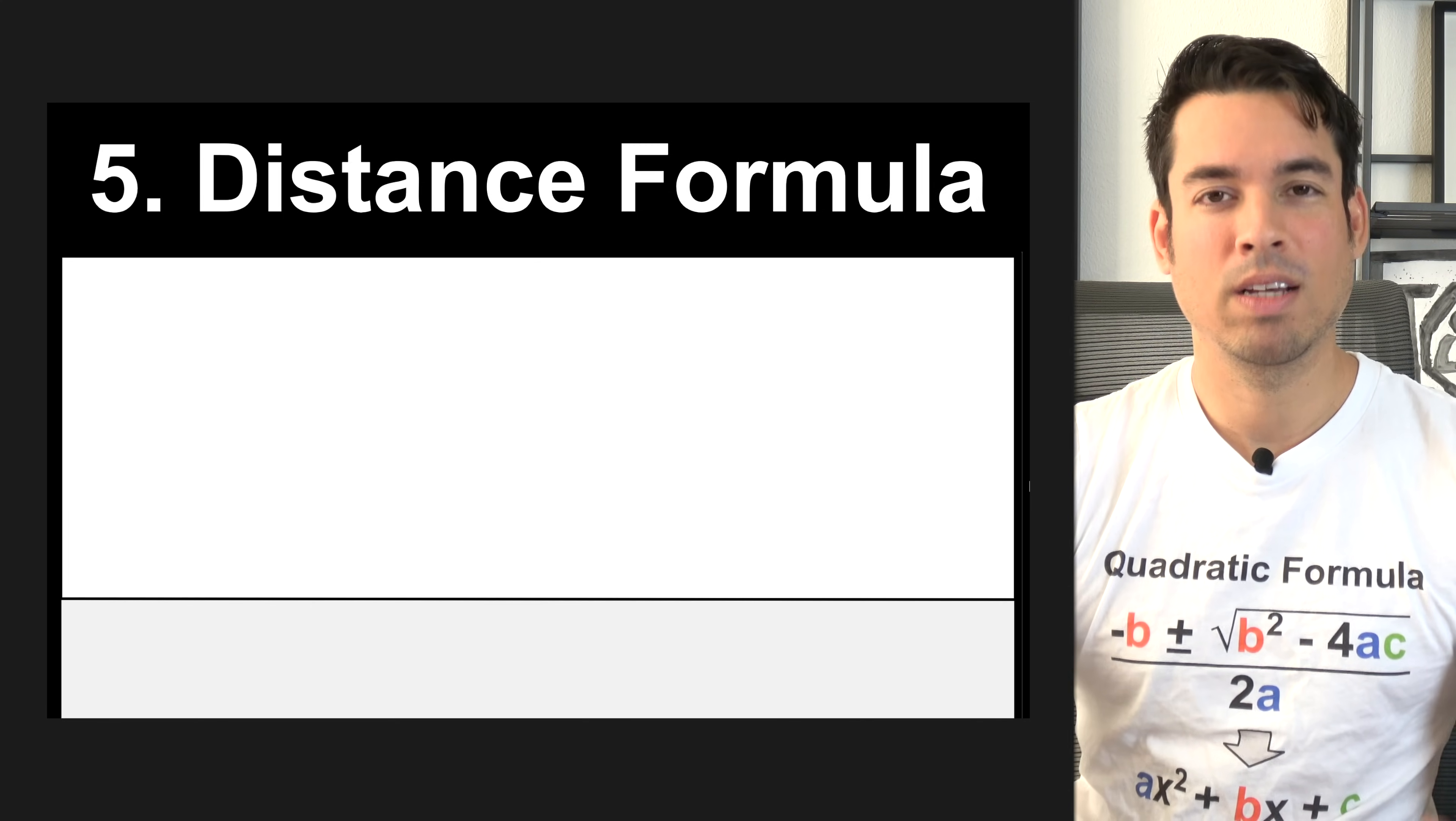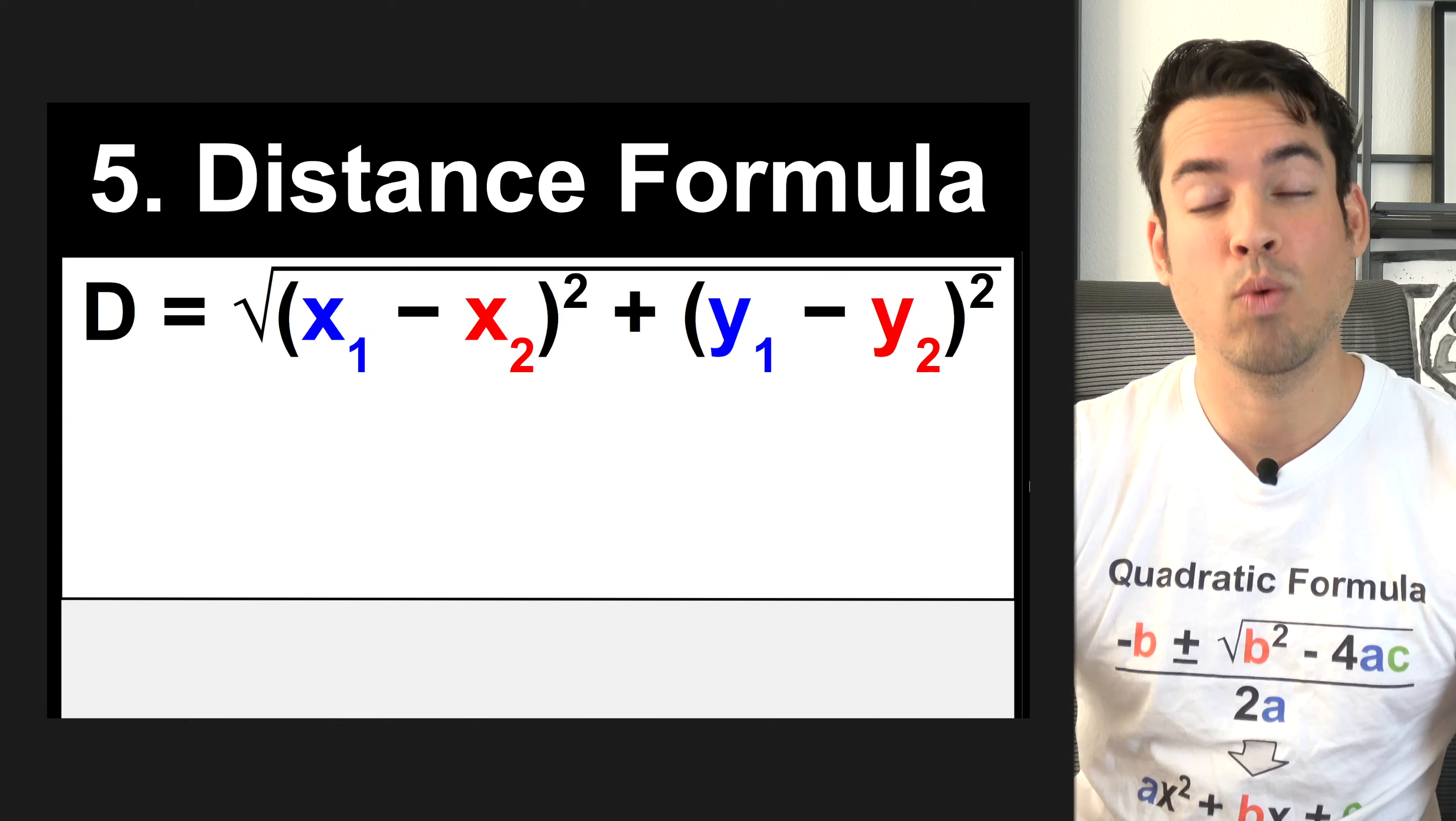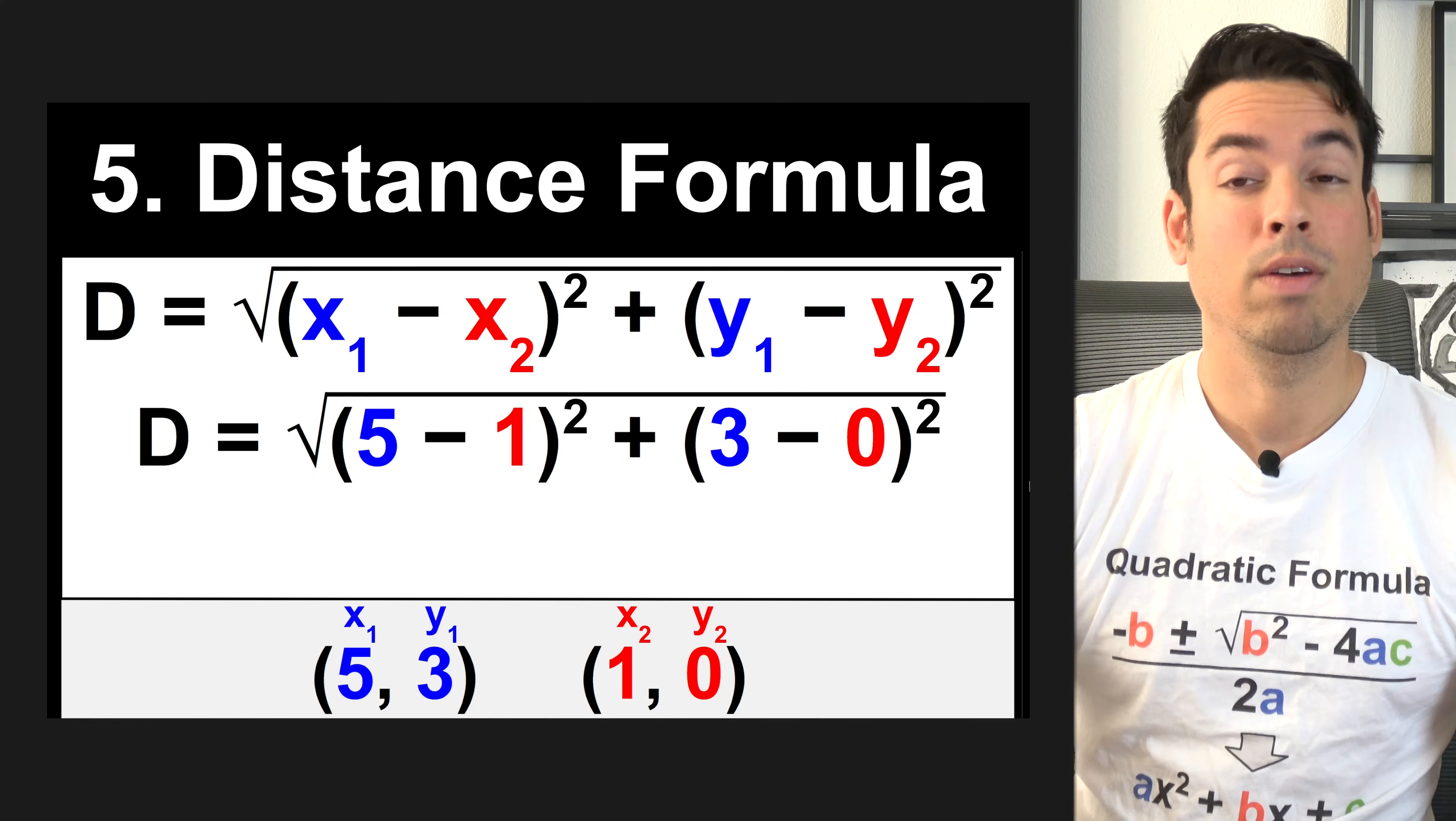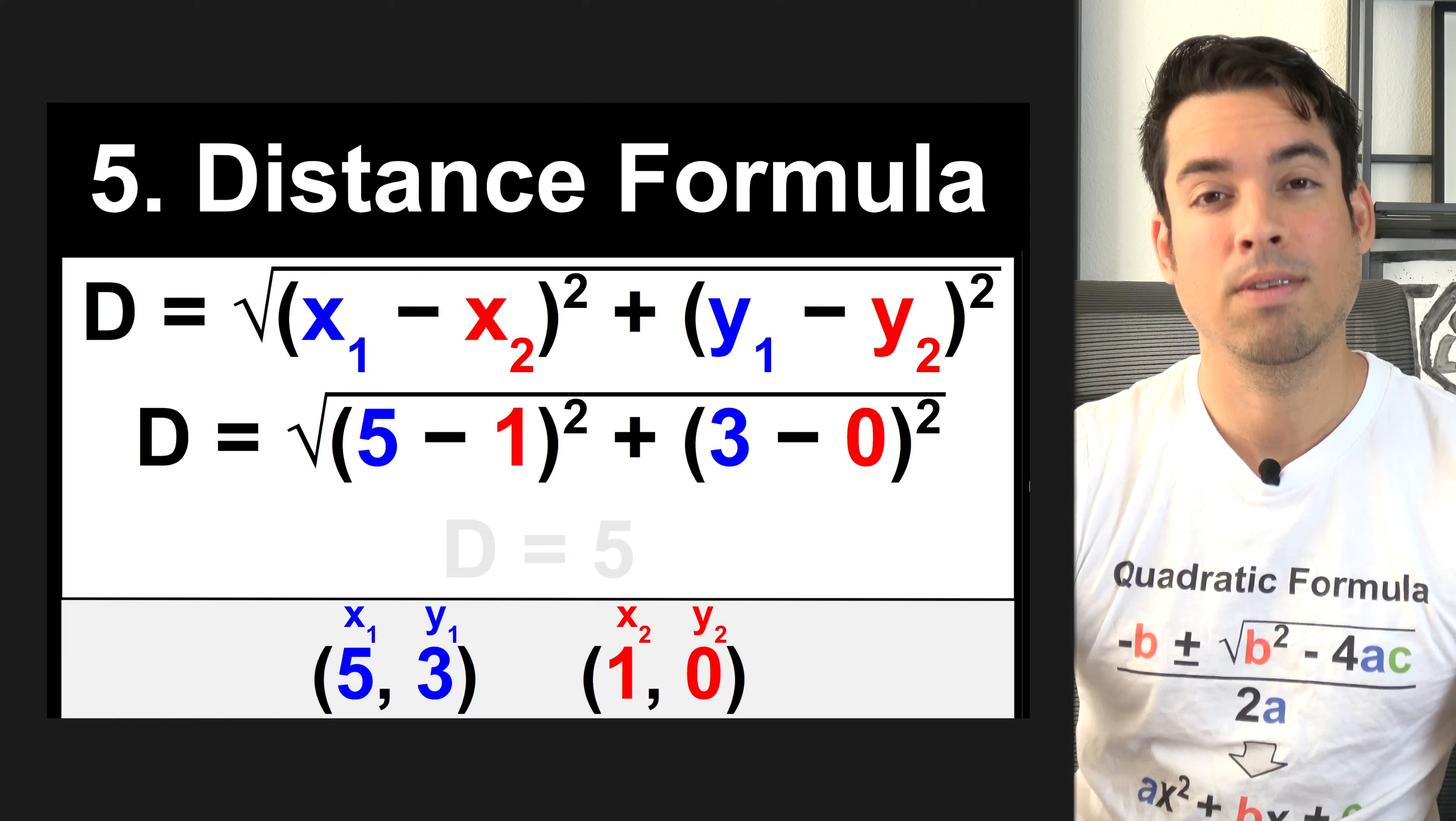Next, we have the distance formula, the formula that you're going to use to calculate the distance between any two points on a coordinate plane. With the distance formula, we're taking the difference of the two X values, squaring that, and adding it to the square of the difference of the two Y values. If we have the two points 5, 3, and 1, 0, we can plug them into the distance formula like so. 5 minus 1 squared is 16, and 3 minus 0 squared is 9. 16 plus 9 gives us 25, and the square root of 25 gives us a distance of 5.